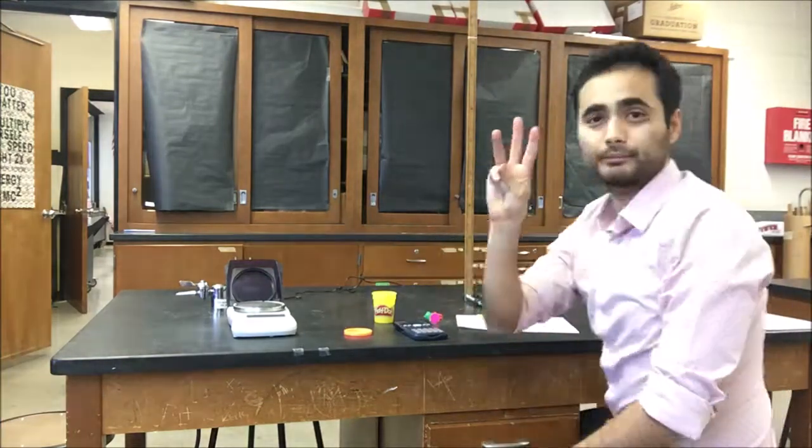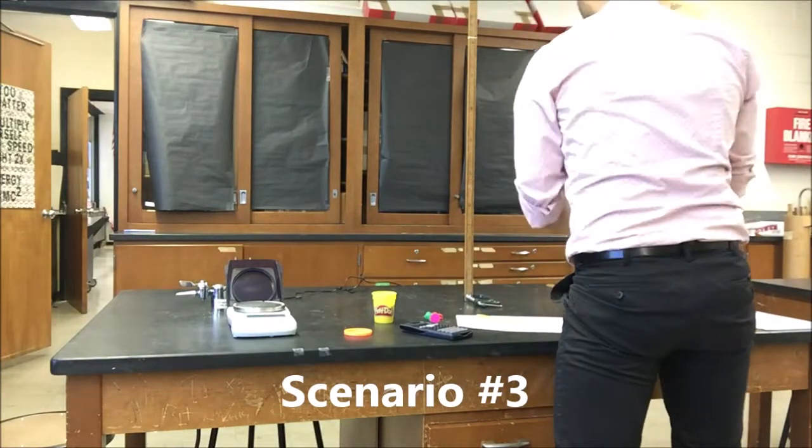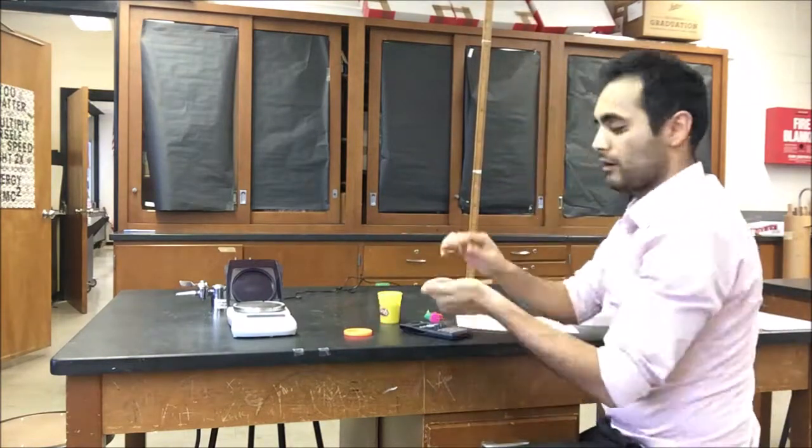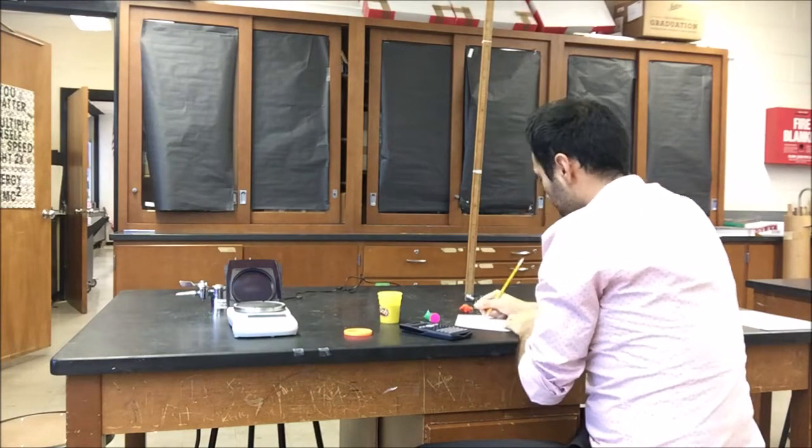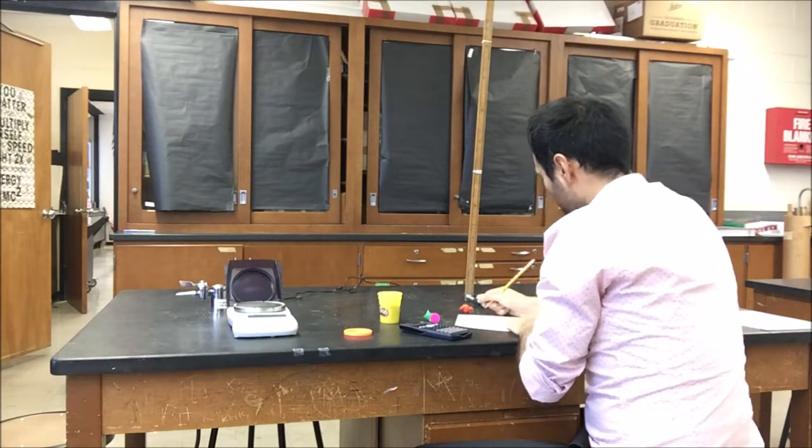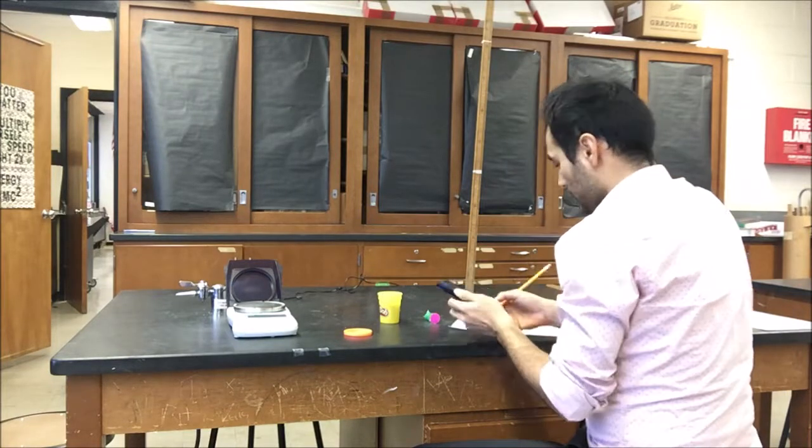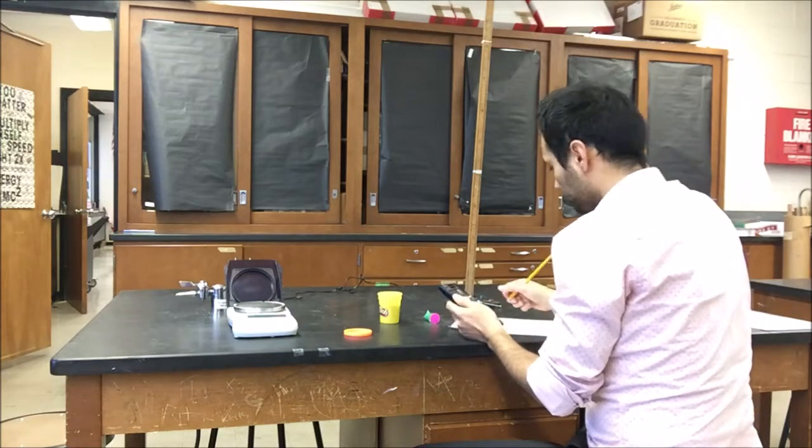The last scenario is you want to figure out how much play-doh you have to put on the hopper for it to go up 60% of its original height. So what you're going to do is calculate to find out how much play-doh you have to add to this little hopper to have it reach the 60% height.